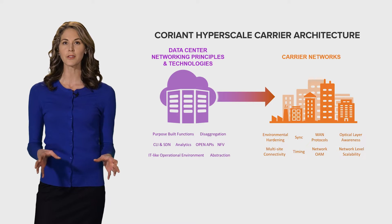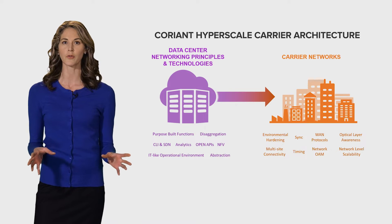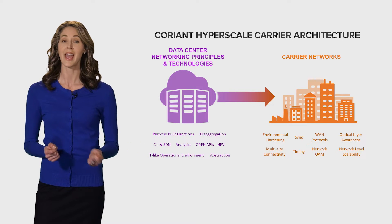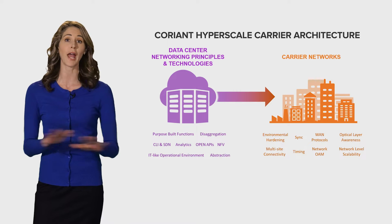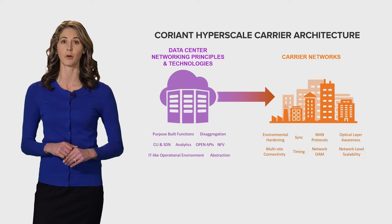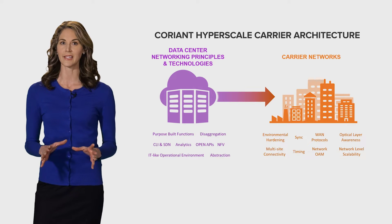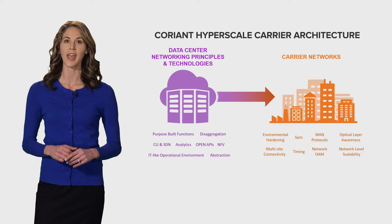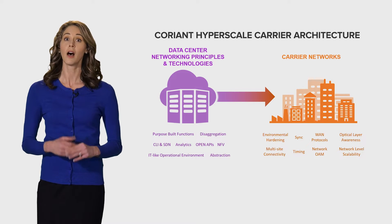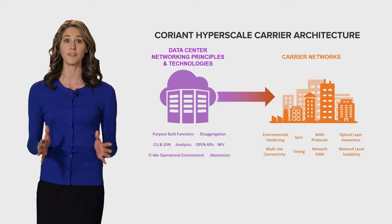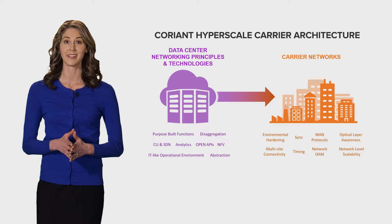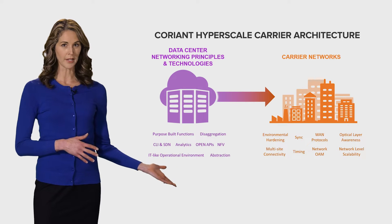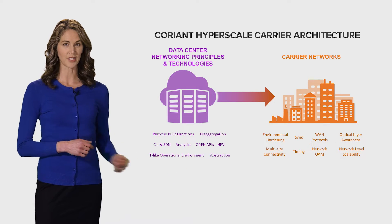The result is a versatile, software-driven, open and agile networking solution applicable for any type of network operator that will dramatically accelerate the speed of innovation and provide network savings of greater than 50%. There are four key components that comprise Coriant's HCA.